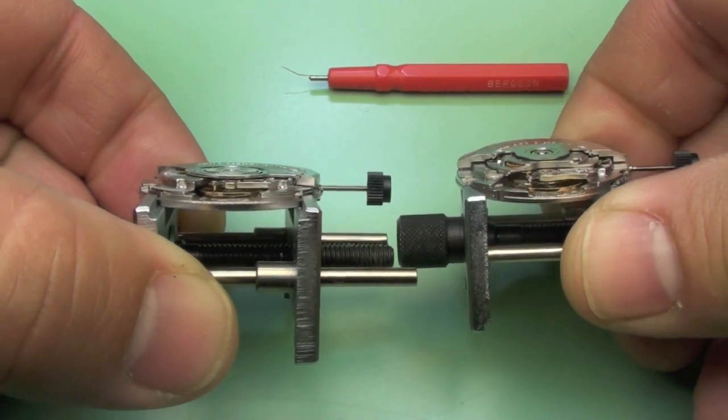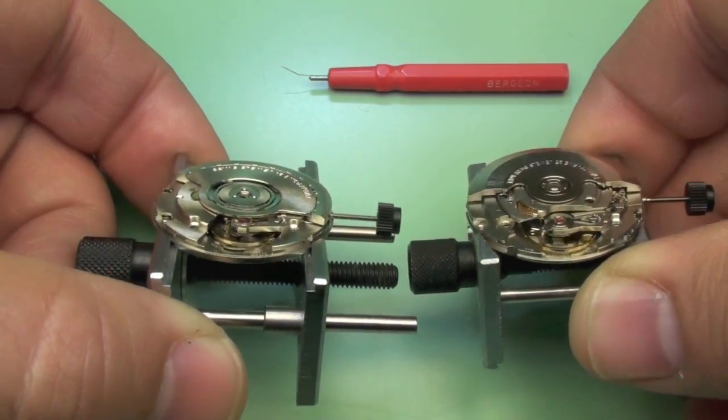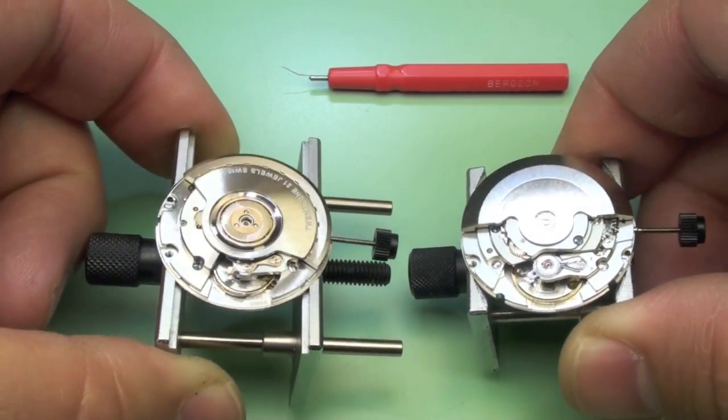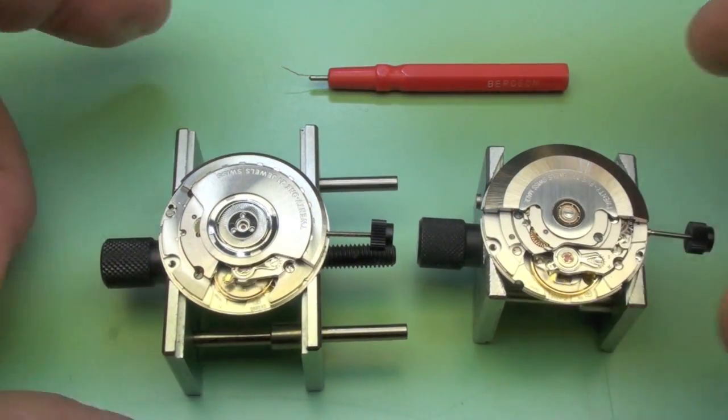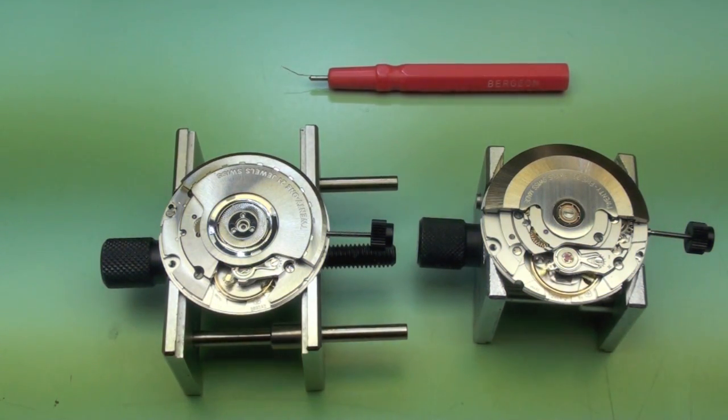This check is performed after the individual parts have been disassembled, cleaned, reassembled, and properly lubricated. Our examples today will be both the 2892 and 2824, two bi-directional winding calibers with separable automatic modules.